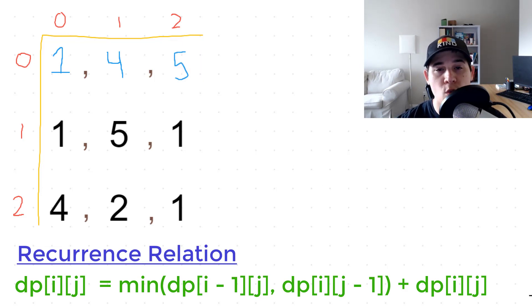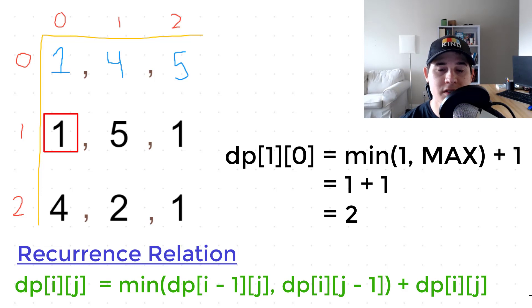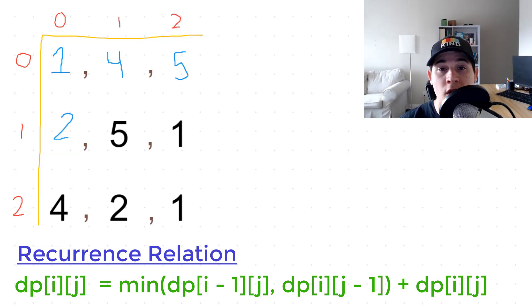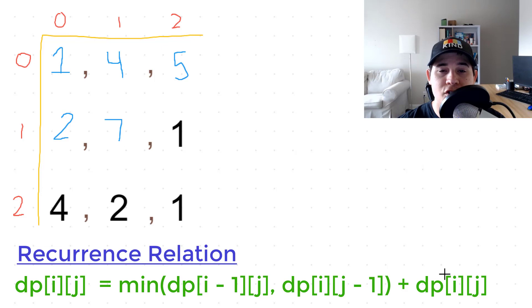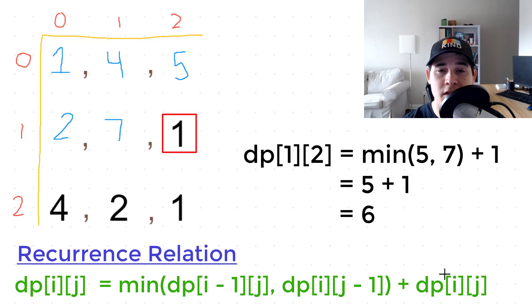Now we look at position (1, 0). We look above us and we have a number 1. And then to the left of us is out of bounds. So we immediately take the minimum value as 1. And then we add it to our current position. So 1 plus 1 is 2. Then we look at position (1, 1). Above us, we have a 4. To the left of us, we have a 2. The minimum would be 2 plus our current position, which equals 7. Position (1, 2). The minimum between the up and left would be 5 plus the number 1, which is 6.